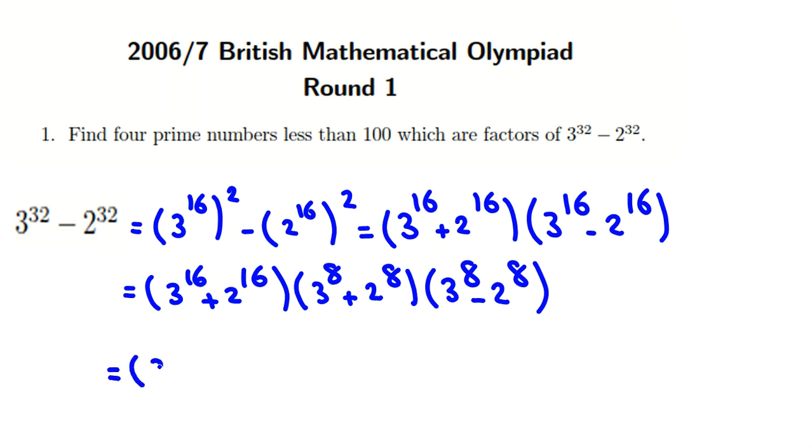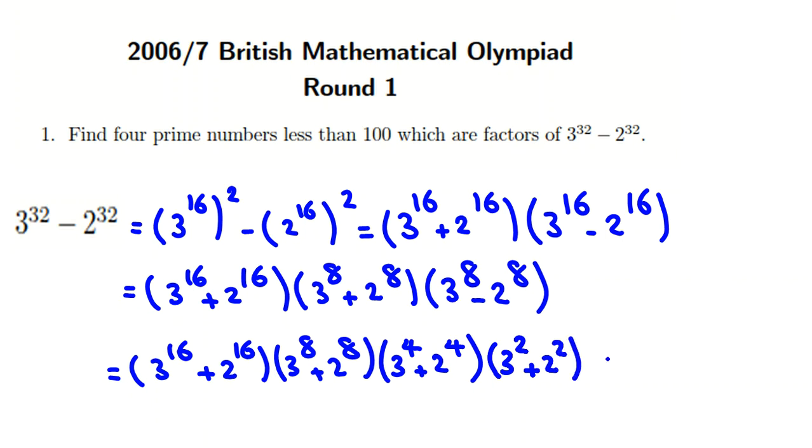If we use the same thing, the first one, 3 to the 16 plus 2 to the 16, then 3 to the 8 plus 2 to the 8, I write 3 to the 4 minus 2 to the 4, I write 3 squared plus 2 squared, 3 squared minus 2 squared, I write 3 plus 2, and the last one, 3 minus 2. So if you multiply these terms by the identity I told you, it will be exactly 3 to the 32 minus 2 to the 32.